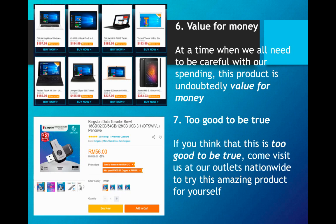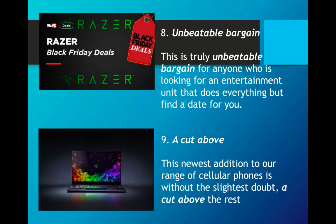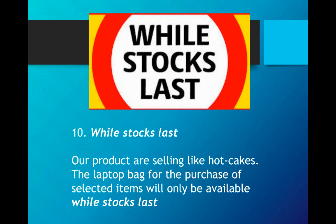Too good to be true is also a useful phrase — for example: if you think this is too good to be true, come visit us at our outlets nationwide to try this amazing product for yourself. Unbeatable bargain is another good phrase when explaining price. A cut above — this newest addition to our range of cellular phones is, without the slightest doubt, a cut above the rest — meaning it is the top pick compared to other products in terms of features. And finally, while stocks last — our products are selling like hot cakes: the laptop bags for purchase of selected items will only be available while stocks last.